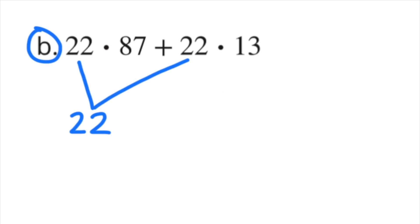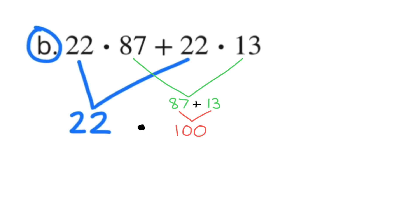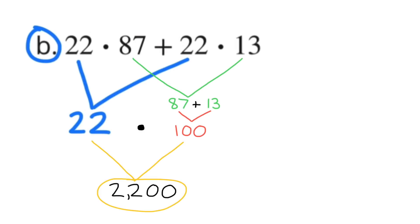Part B: 22 times 87 plus 22 times 13. Since 87 and 13 are both being multiplied by 22, we can bring the 22 down and multiply it by the sum of 87 and 13. 87 plus 13 equals 100, and 22 times 100 equals 2200. It's easy to evaluate these expressions because the sum of 87 and 13 was easy and so was finding the product of 22 and 100.